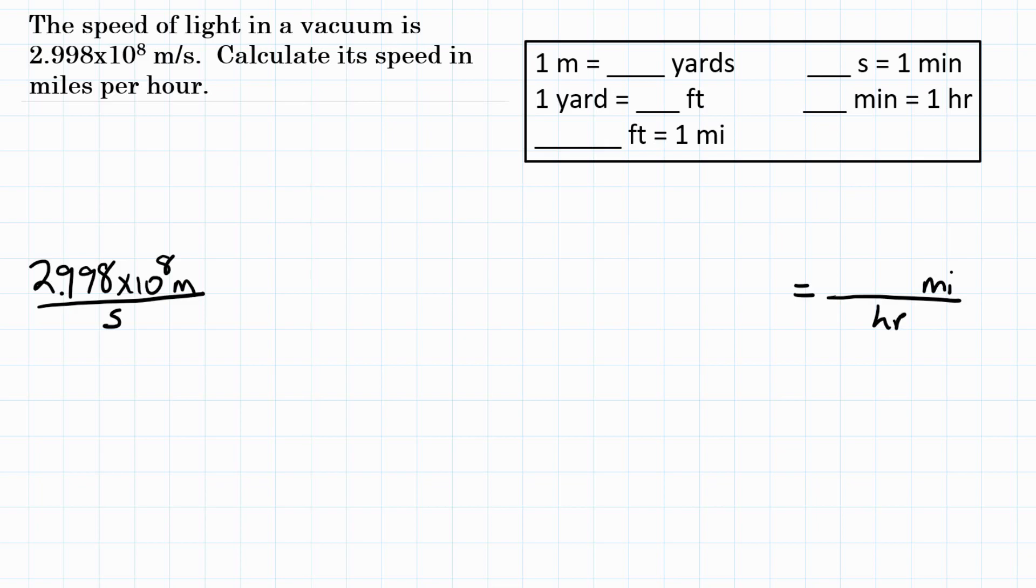So before we do our dimensional analysis, before we multiply this by conversion factors to convert our units, we need to know the relationships for those conversions. So up in this top box, I need to know that one meter equals how many yards? That is 1.0936 yards.